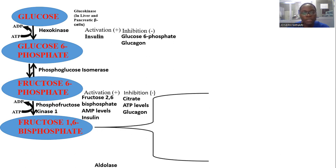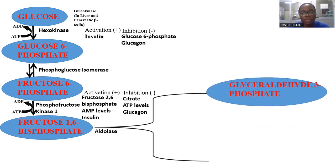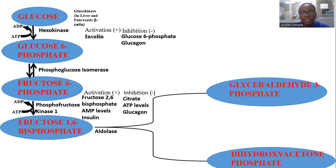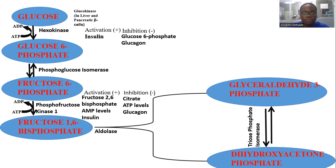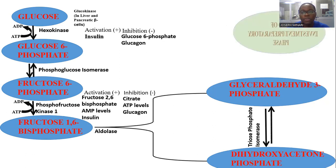Fructose-1,6-bisphosphate can now be converted in the presence of aldolase to glyceraldehyde-3-phosphate and dihydroxyacetone phosphate. These two products are interconvertible in the presence of the enzyme triose phosphate isomerase — glyceraldehyde-3-phosphate can be converted to dihydroxyacetone phosphate and vice versa. This marks the end of the investment or preparatory phase of glycolysis.